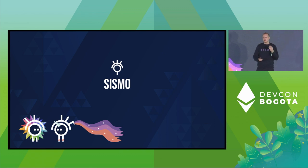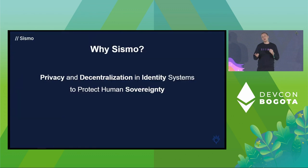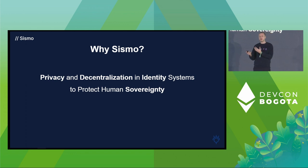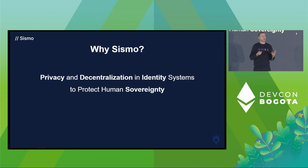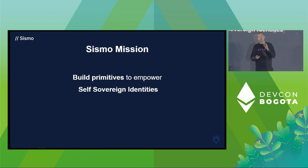We started Sysmo because we are concerned about the centralization and lack of privacy of our recurrent social tools and digital identities. We think that there's too much power in the hands of big companies holding our personal data, and in governments that can access it at will. What we want to do is add a privacy and decentralization layer in identity systems so that we remain sovereign — protecting human sovereignty, making sure individuals remain in control, and keeping central entities, whether public or private institutions, in check. What we do is build primitives to empower self-sovereign identities.